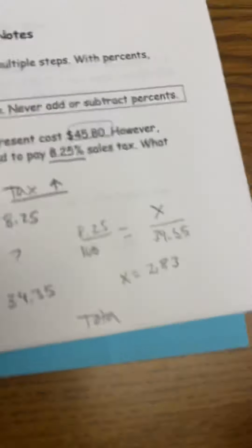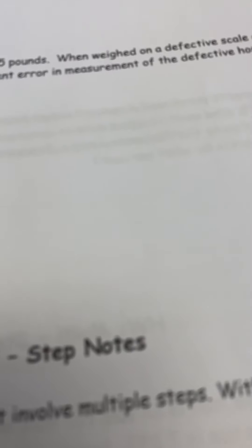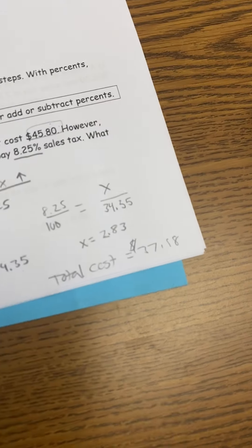So what is $34.35 plus $2.83? 34.35, it comes out to be $37.18. So the total cost is $37.18.